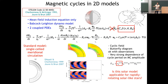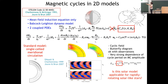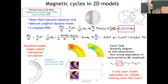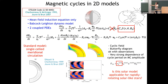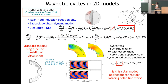Starting with very simple 2D kinematic models — no back-reaction of the magnetic field on the velocity field — using a poloidal equation and a toroidal equation with a Babcock-Leighton source term, we can nicely reproduce a cyclic magnetic field. For example, in the northern hemisphere, at the base of the convection zone, you recover the equatorial migration of sunspots from mid-latitudes toward the equator. These models use a single meridional circulation cell per hemisphere.